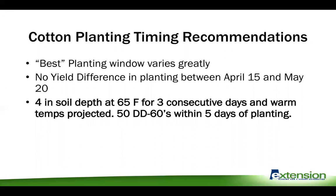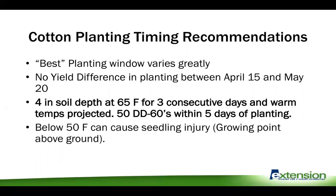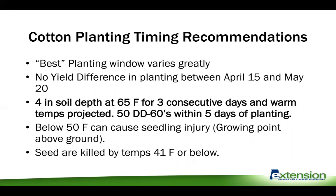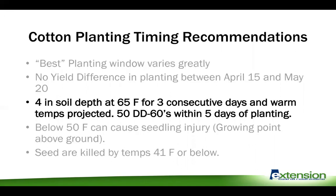It's a good idea to look at your five-day forecast and calculate your DD60s for that period. As long as you're getting about 50 with that calculation, you should be good to go. The main reason is that temperatures below 50 degrees Fahrenheit can cause seedling injury, since the cotton growing point is above the ground, and seeds don't survive temperatures below 41 degrees Fahrenheit. So the main recommendation is four-inch soil depth at 65 degrees Fahrenheit for at least three days, with warm temperatures predicted for the next five days. Thanks for listening.